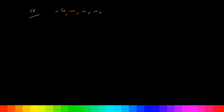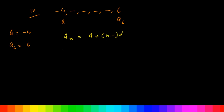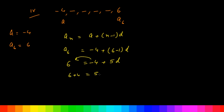Part 4: the series is -4, dash, dash, dash, dash, 6. The values of A and A6 are given: A = -4 and A6 = 6. Putting values in An = A + (N - 1)D: A6 = -4 + 5D = 6. So 6 + 4 = 5D, meaning 10 = 5D, therefore D = 2.